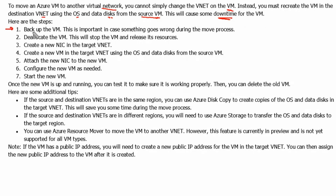Here are the steps. Step one is to back up the VM — this is important in case something goes wrong during the move process. Step two is to de-allocate the virtual machine, which will stop it and release its resources. Step three is to create a new NIC in the target VNet. Step four is to create a new virtual machine in the target VNet using the OS and data disk from the source virtual machine. Step five is to attach the new NIC to the new virtual machine. Step six is to configure the new virtual machine as needed. Step seven is to start the new virtual machine. Once it is up and running, test it to ensure it works properly, then delete the old virtual machine.